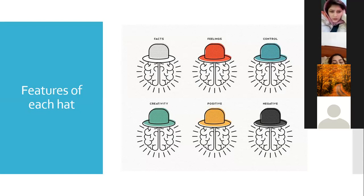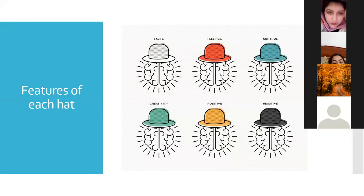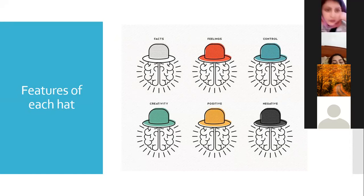Let's have a deeper look at the features of each hat. White hat is focused on information and data. Red hat is the feelings hat. Blue hat is the process or control hat. Green hat is the creativity hat. Yellow hat is the positive hat — the color of sunshine and positiveness. Black hat is the negative hat — it thinks about difficulties, risks, and weak sides.